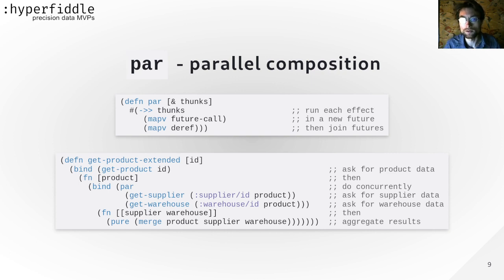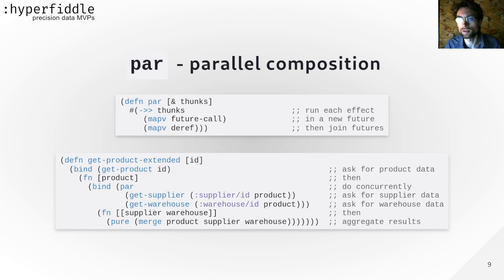That's a functional effect system. What we've done is replace actions with descriptions. Instead of doing, we describe. We represent effects as values, define pure functions to transform them, and build our program as a composition of effects.